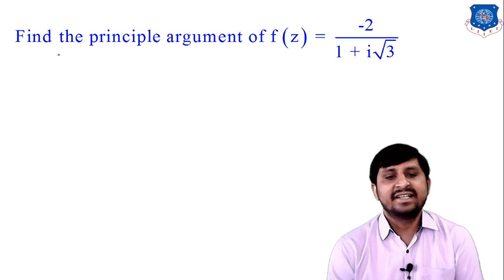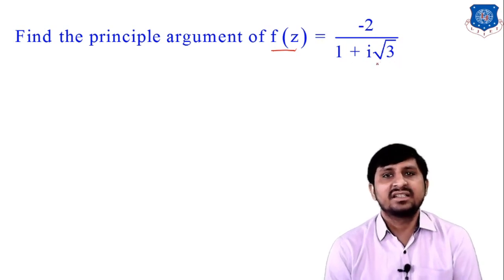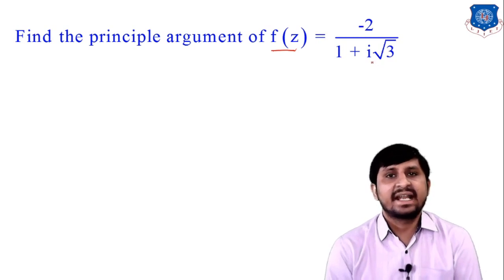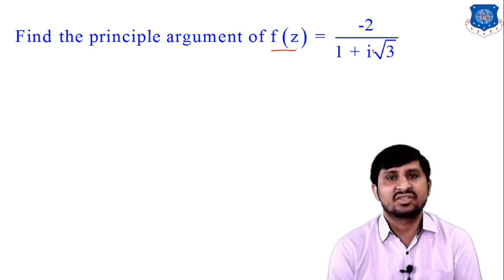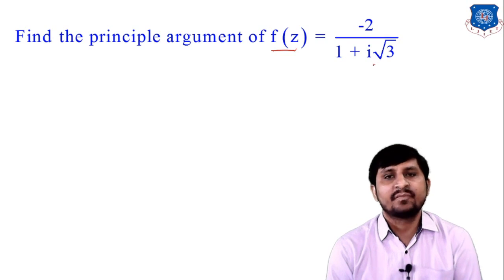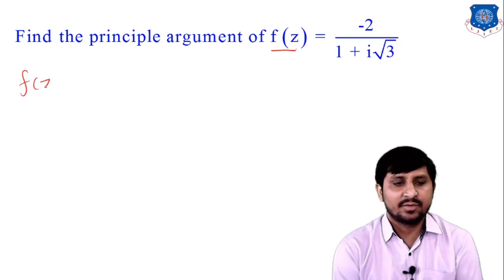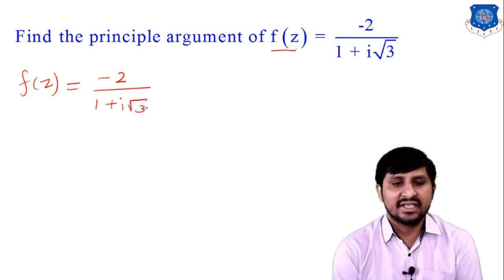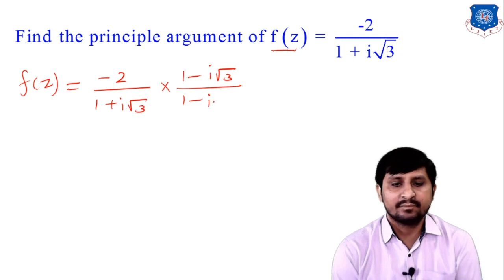Next example: find the principal argument of z = −2/(1 + i√3). First convert to x + iy form by multiplying with the conjugate (1 − i√3) over (1 − i√3). The numerator becomes −2(1 − i√3) = −2 + 2i√3, and the denominator is 1² + (√3)² = 4.